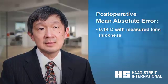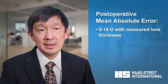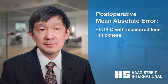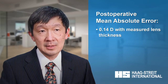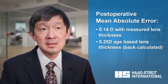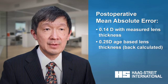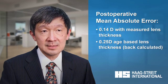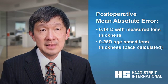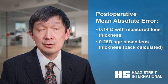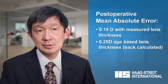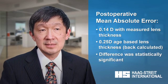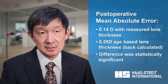Postoperatively, the mean absolute error of our group was 0.14 diopters. However, when we back-calculated the expected refractive outcome with age-based lens thickness, the mean absolute error increased to 0.25. The difference was statistically significant.